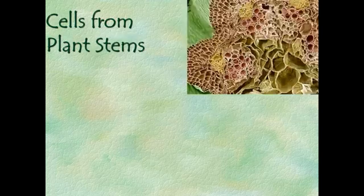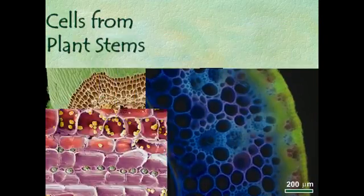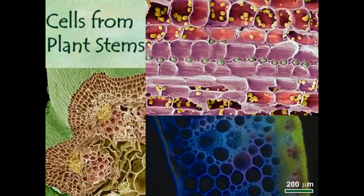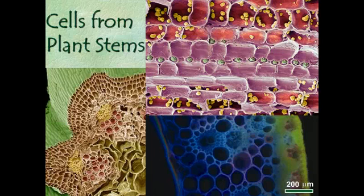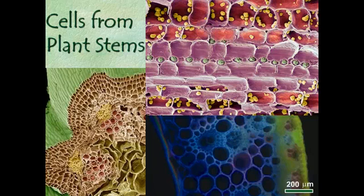Here's another picture that shows some cells from stems, taken with a very different type of microscope, and you can see they look entirely different yet. These are from the stems of a couple of different types of plants. The thing I want you to keep in mind is that when we talk about a typical cell, there really is no typical cell. There are some things they all have in common, but all of these cells are different depending on the particular job that they do.